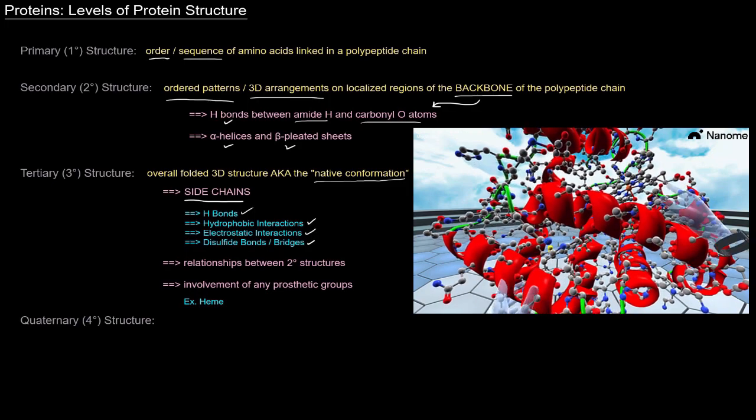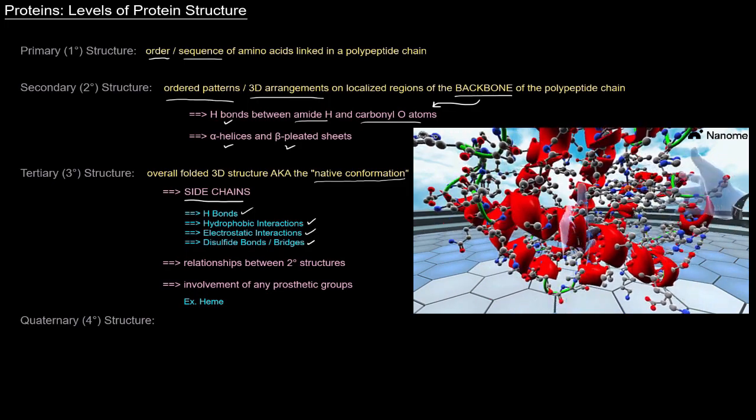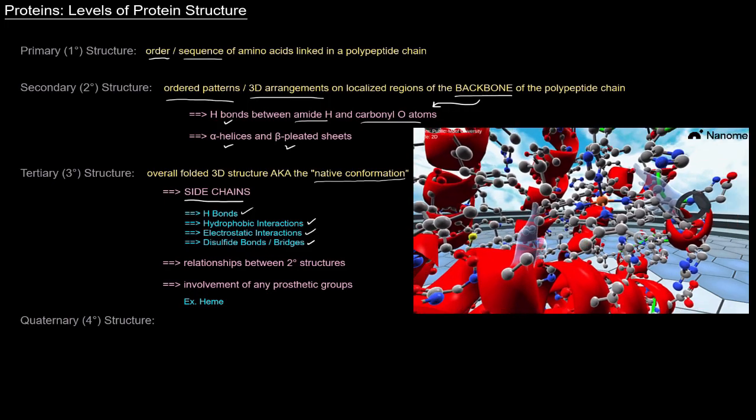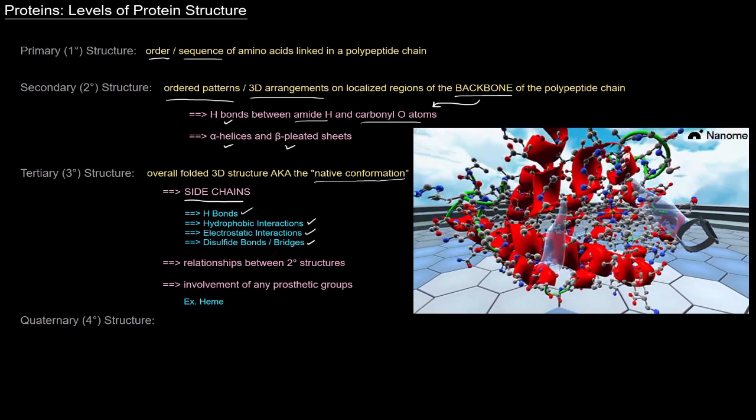And the involvement of any prosthetic groups, you're talking about tertiary structure. One example of a prosthetic group is heme. And a prosthetic group is any non-amino acid component of a protein.